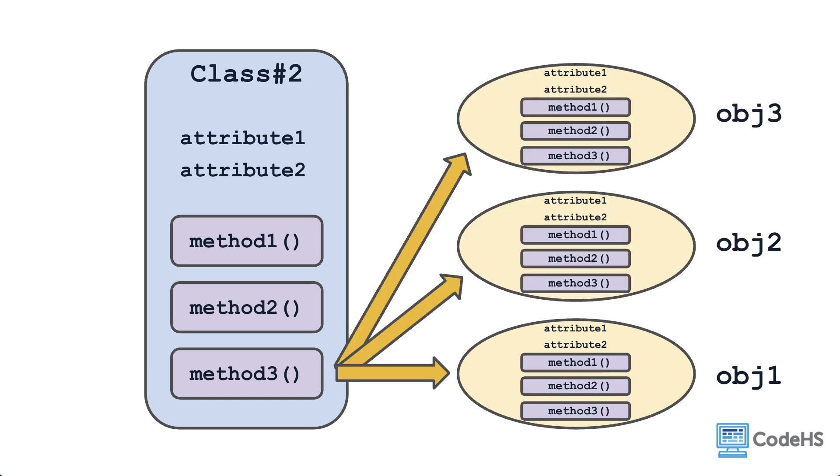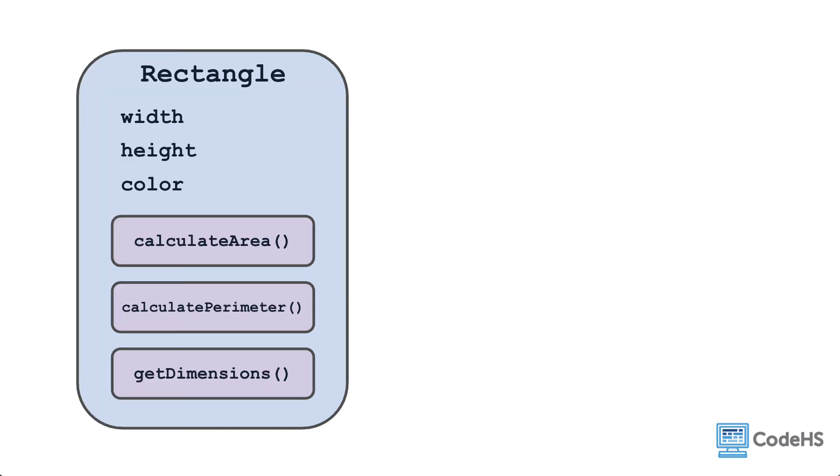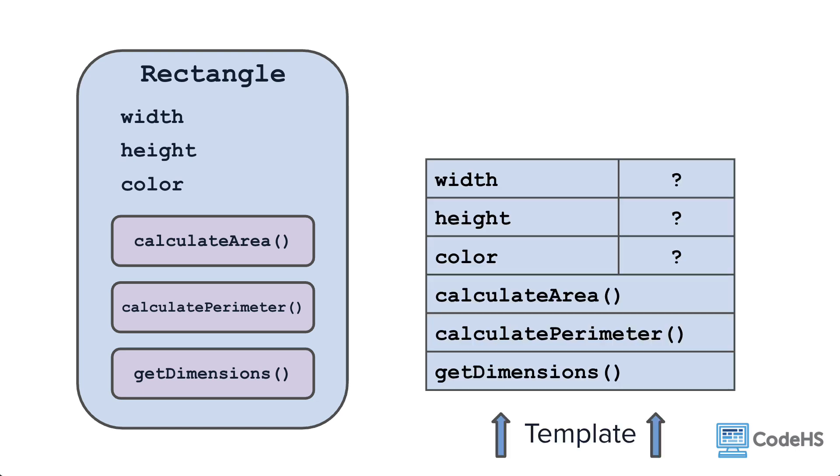In many cases, the attributes in each object will be values unique to the object. Take for example a rectangle class. This rectangle class defines the attributes that every rectangle object will have: width, height, color, and its behaviors: calculate area, calculate perimeter, get dimensions. This creates the blueprint, or template, to create its objects.